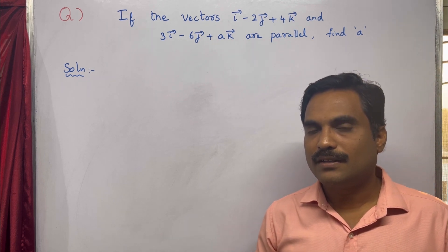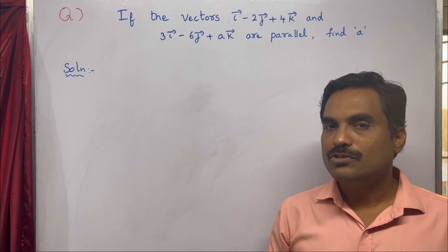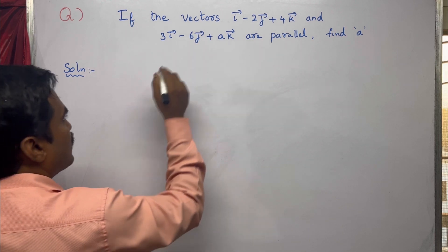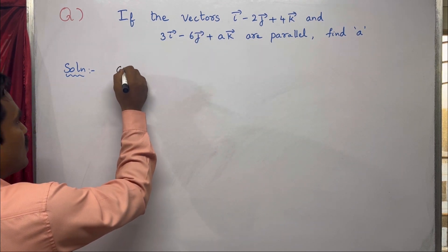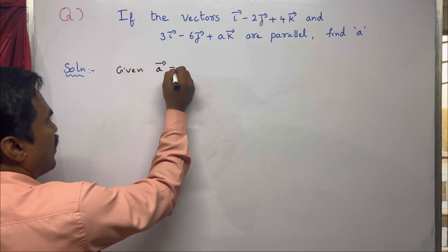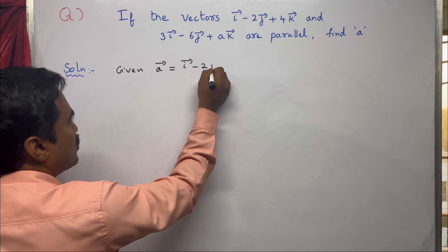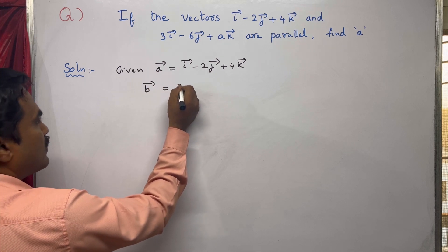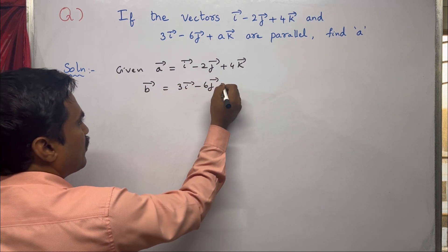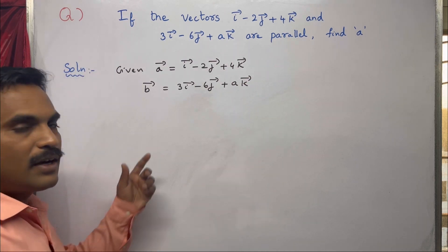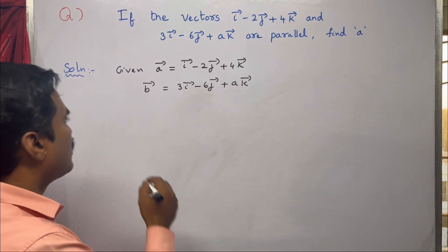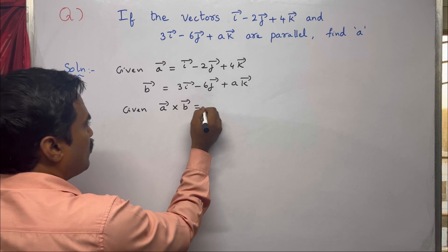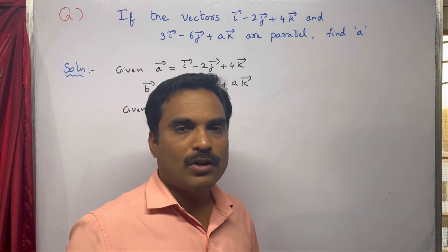The condition for any two vectors a̅ and b̅ to be parallel is a̅ cross b̅ equal to 0. So the first vector a̅ is i̅ minus 2j̅ plus 4k̅, and the second vector b̅ is 3i̅ minus 6j̅ plus ak̅. Since a̅ and b̅ are parallel, a̅ cross b̅ equals 0 — parallel means their cross product is zero.